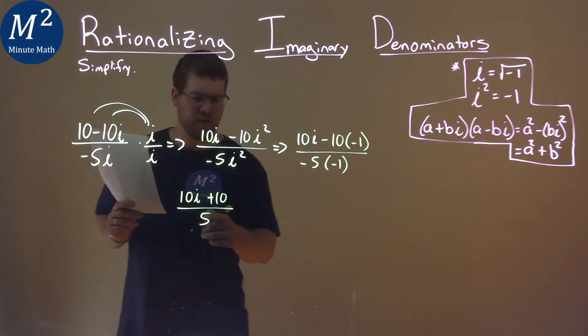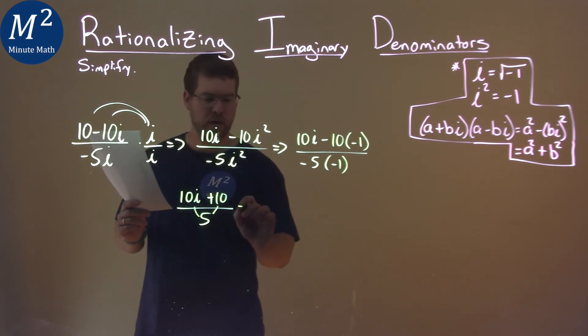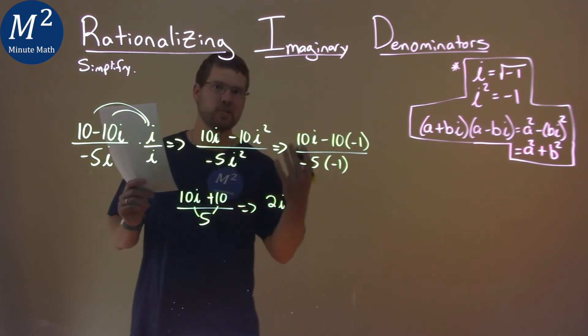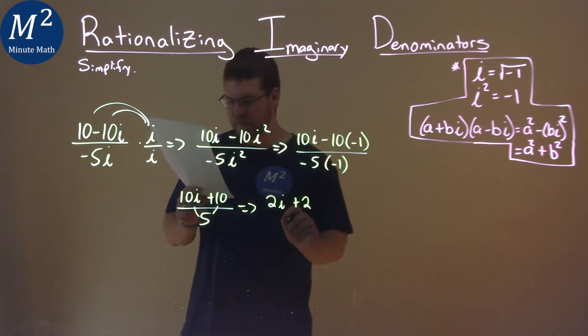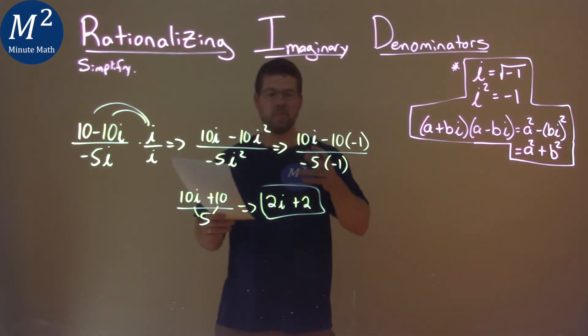But I'm not done. 5 goes into both 10s there, both parts. 5 goes into 10 twice. We have 2i here. 5 goes into that 10 twice, plus 2. And so, our final answer here is 2i plus 2.